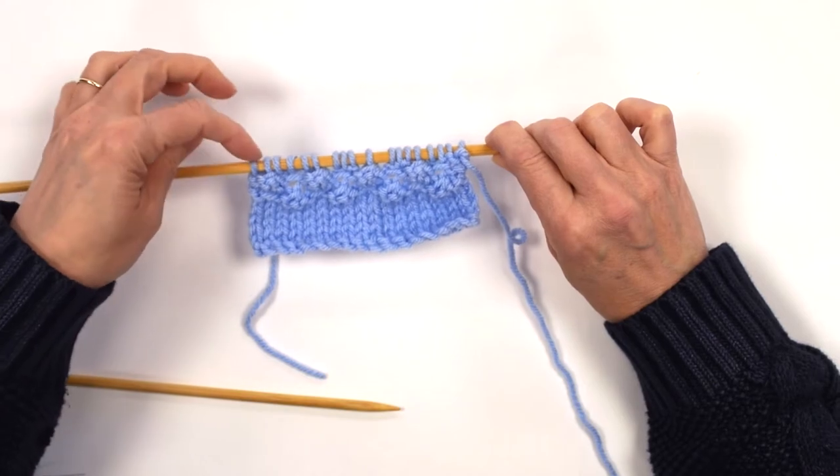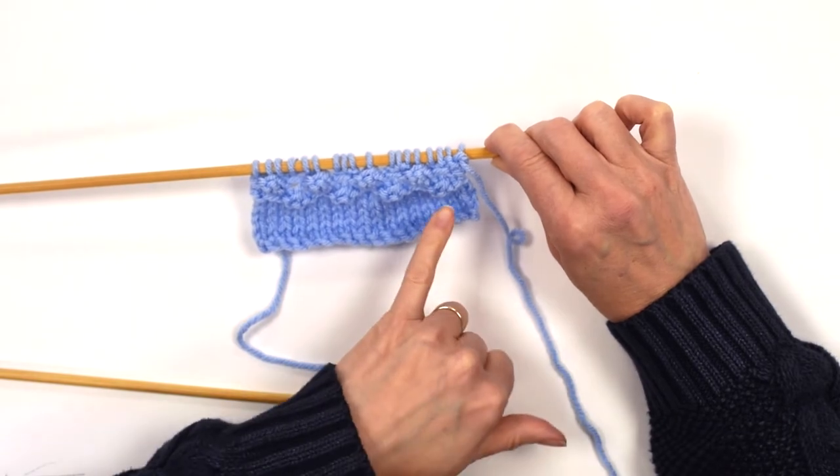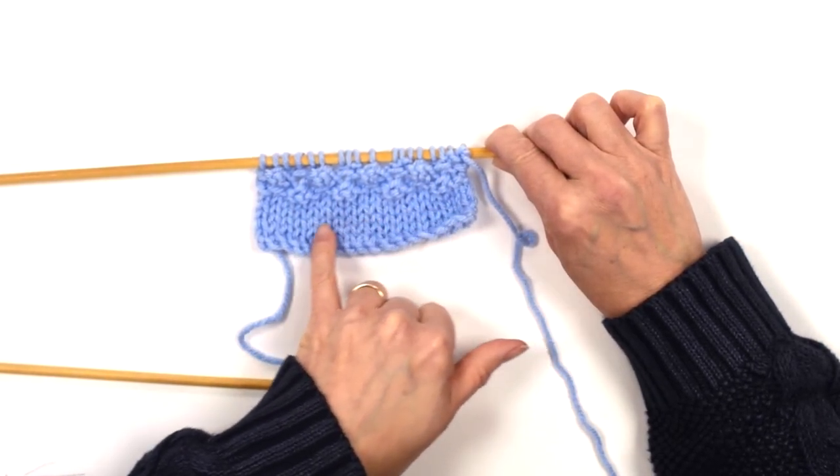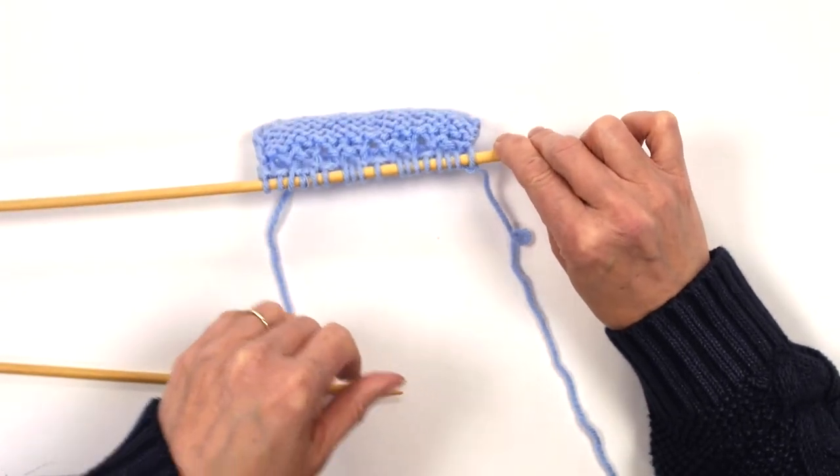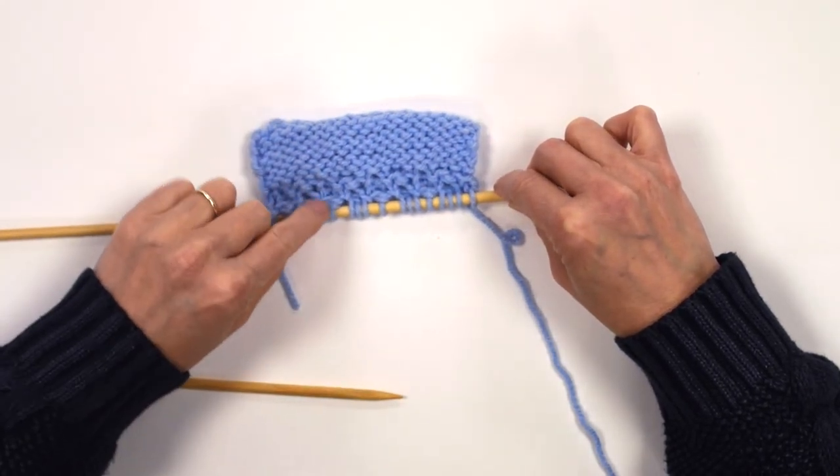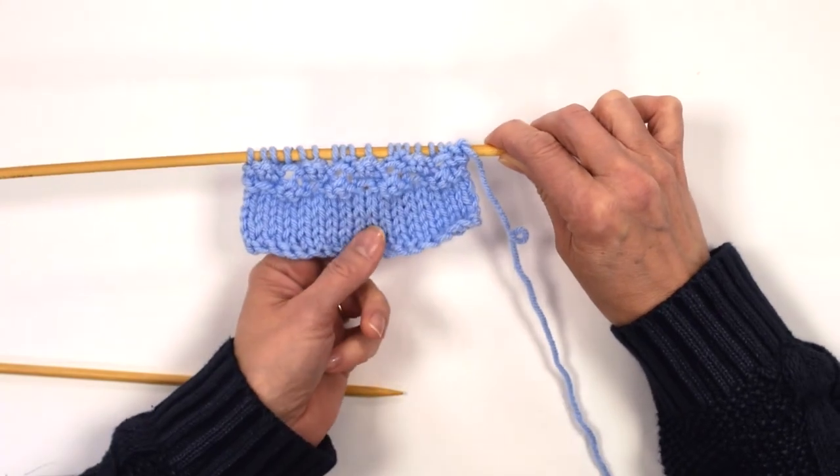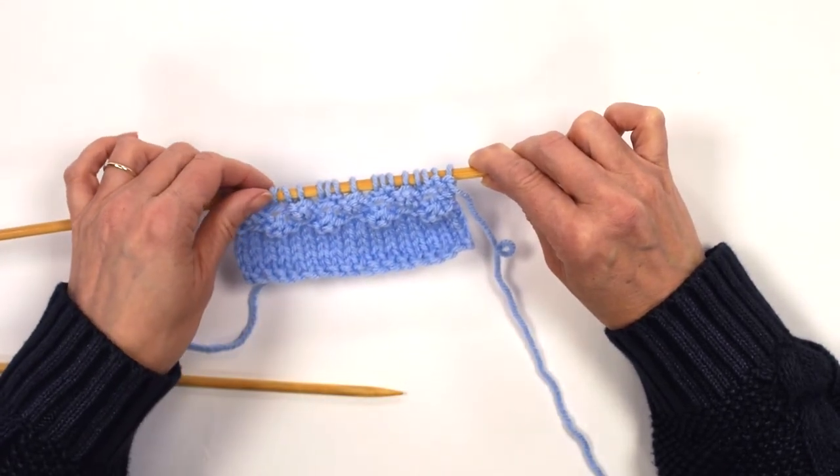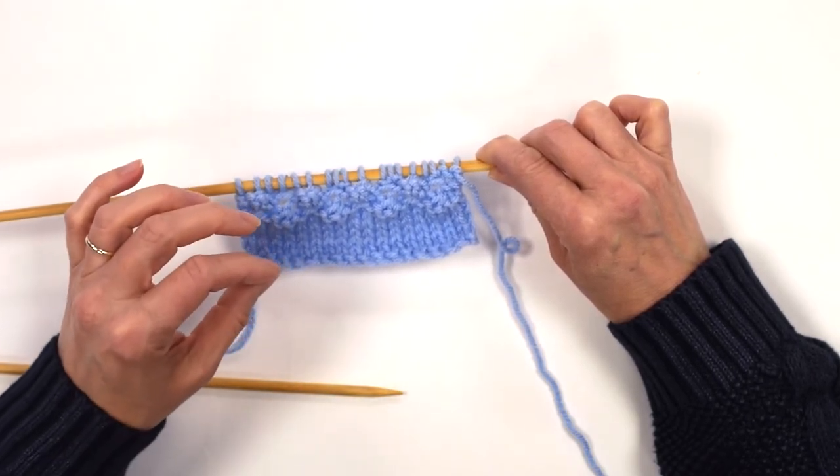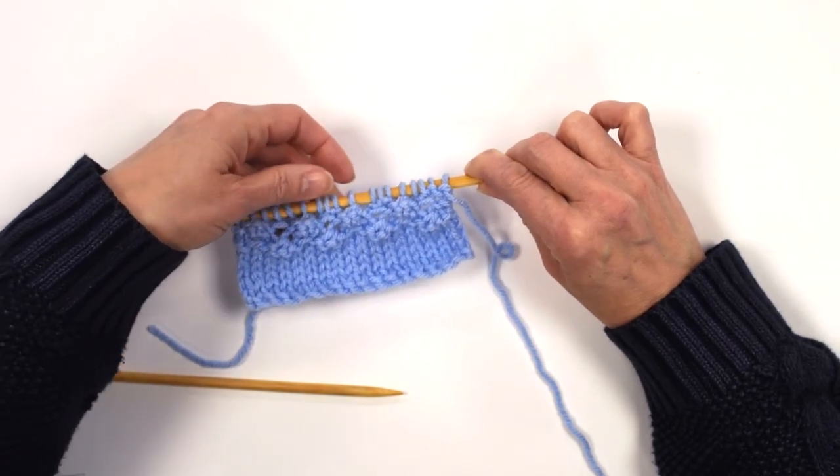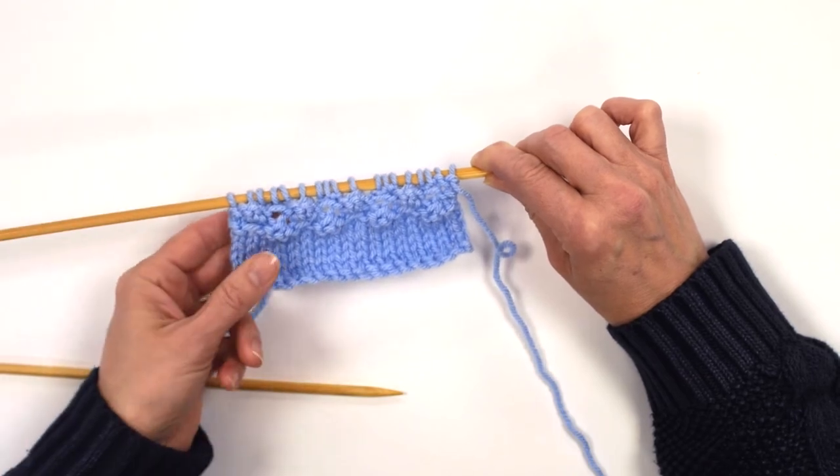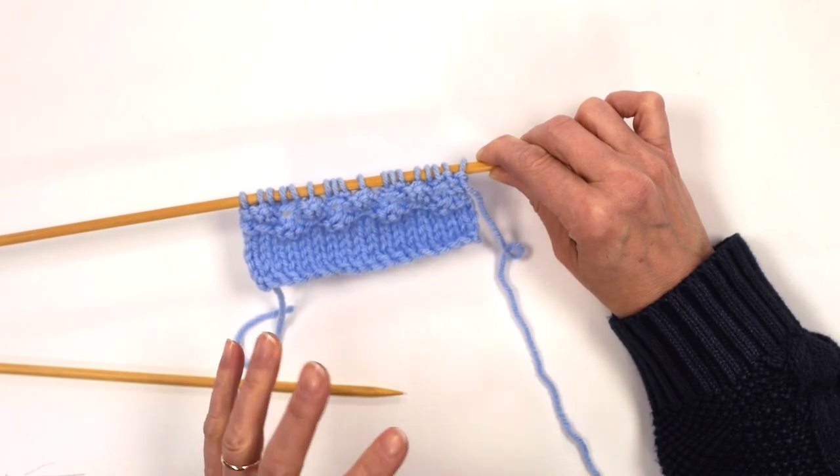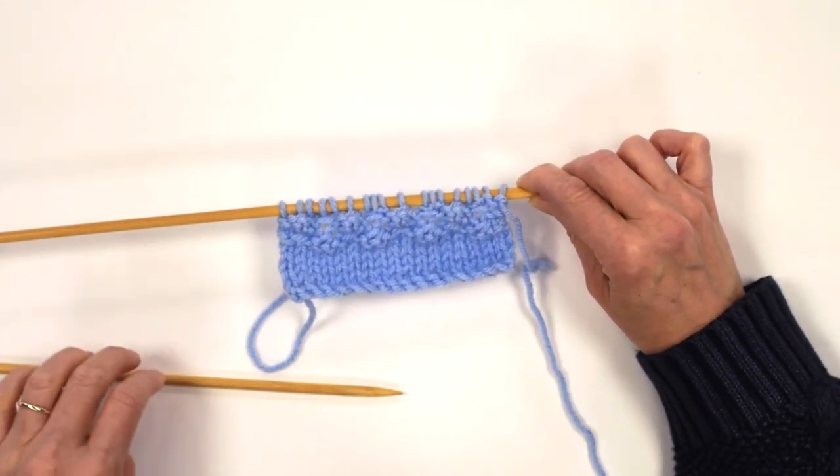So every other row is a purl row, and then you're alternating where you work purl three together or your knit one, purl one, knit one all into the next stitch. This is the front of the fabric—this is the bit of stocking stitch I did to start with. On some of our patterns, we recommend that if this was a DK yarn and you were using four millimeter needles and double knitting, we'd actually recommend going up to a 4.5 to work this stitch. That way it keeps your tension to 22 stitches, 28 rows. But of course, always check your tension on any pattern to make sure that you're adhering to what needs to be there so that the item fits. Hope you found that useful, and I'll see you in the next one.